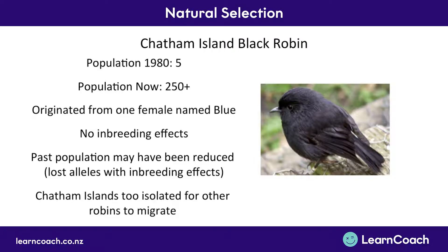One other thing to keep in mind is that Chatham Island black robins are located way out in the Chatham Islands, which is very geographically isolated. It's too far for other robins to migrate in, or for them to migrate out to other places for genetic variation and interbreeding. So the black robin population was isolated, and all of these changes were due to genetic drift and natural selection.